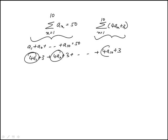So if I just collect these terms, it would be 4a1, 4a2, 4a10, and then I'll have 10 of these 3s.